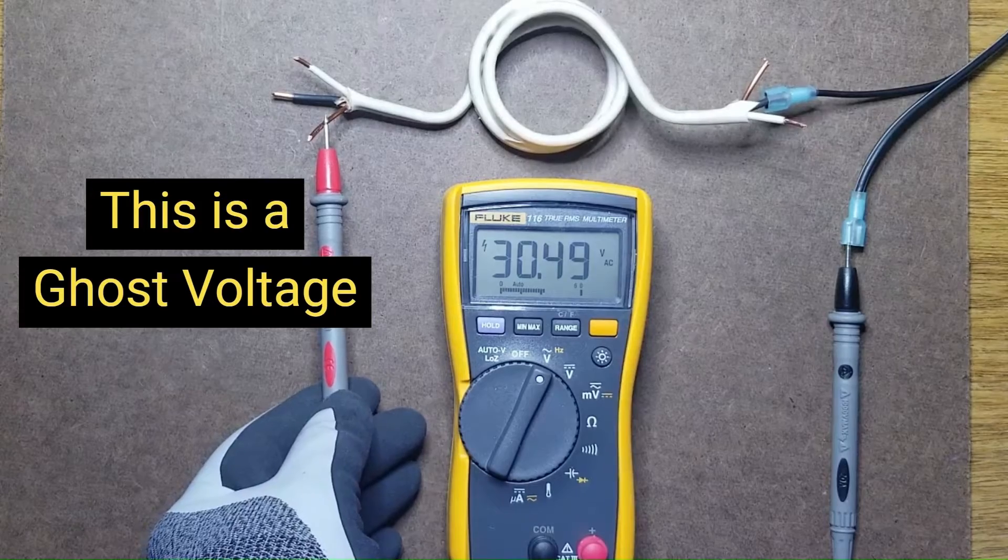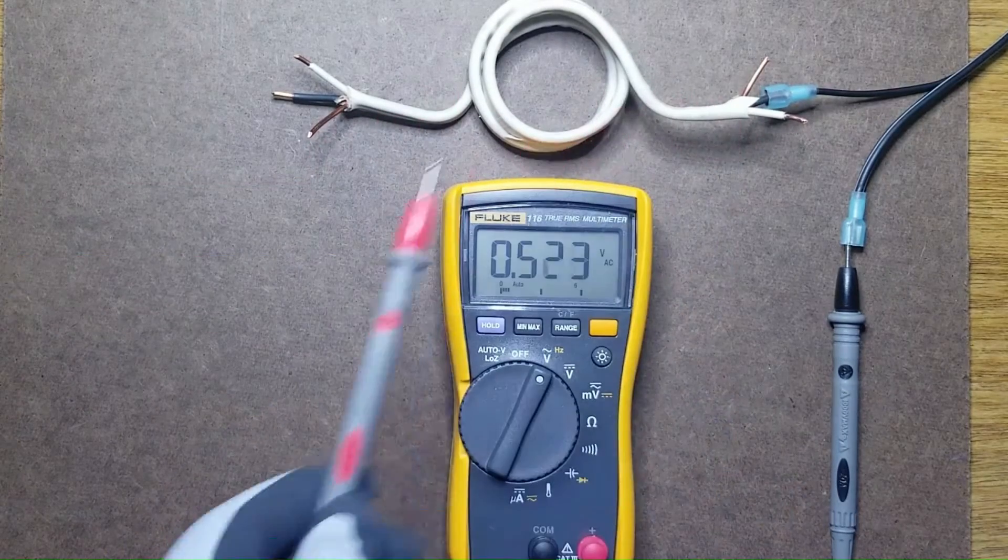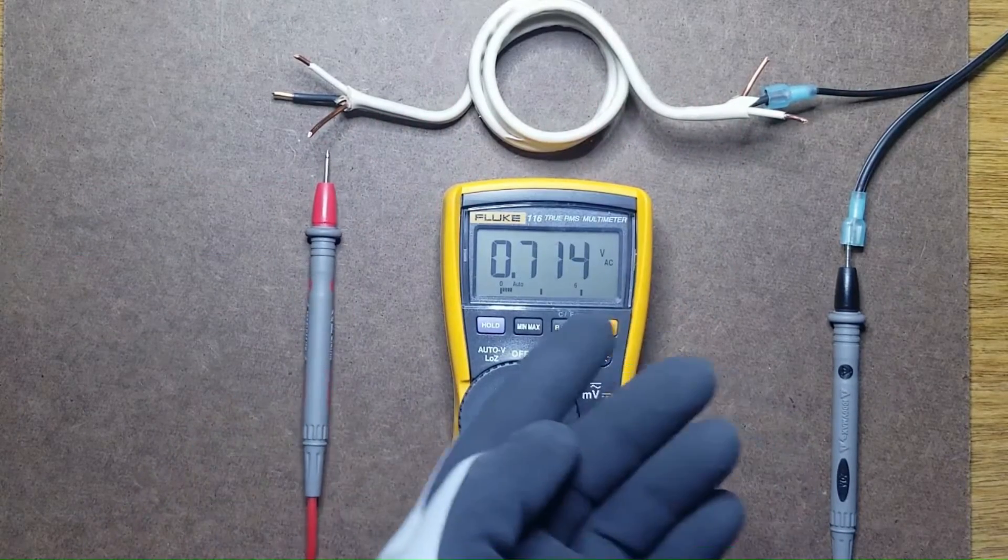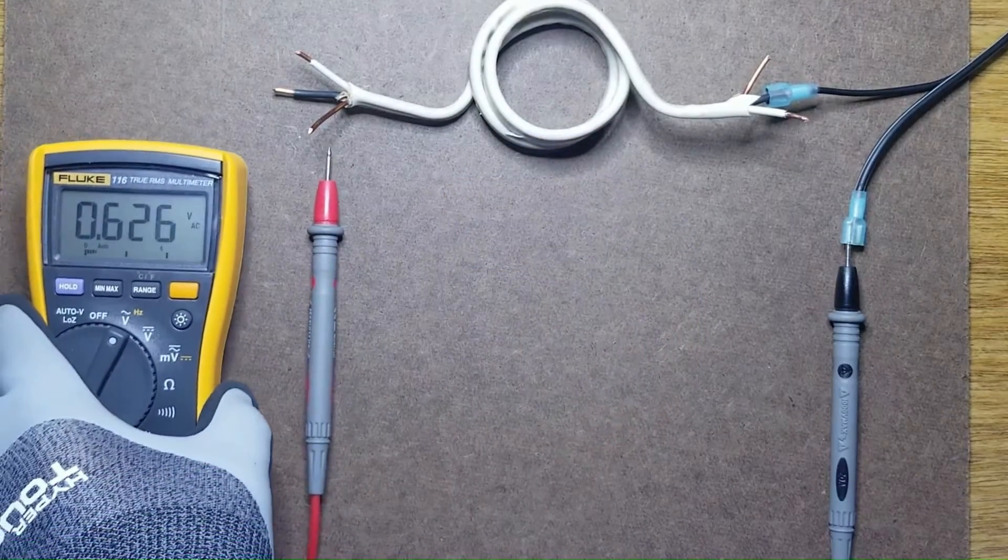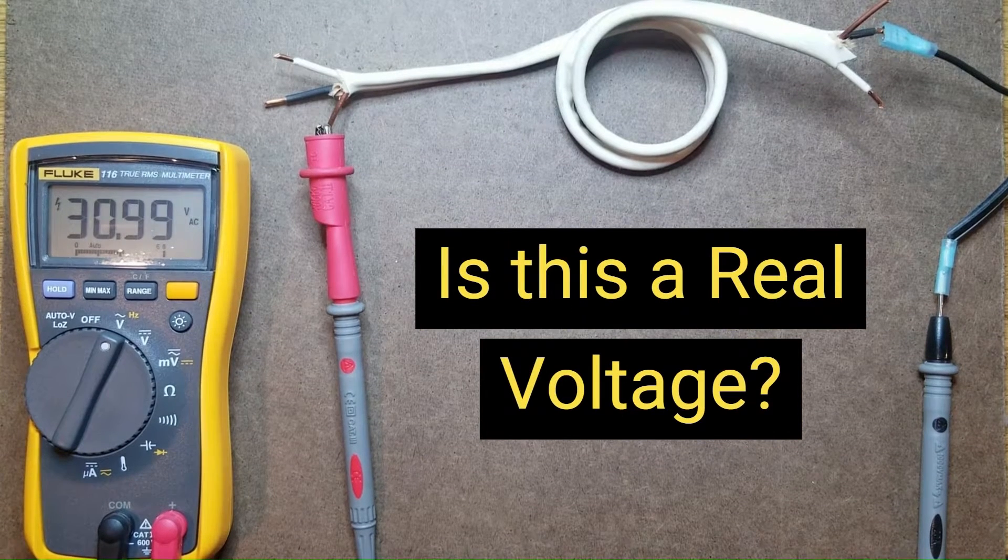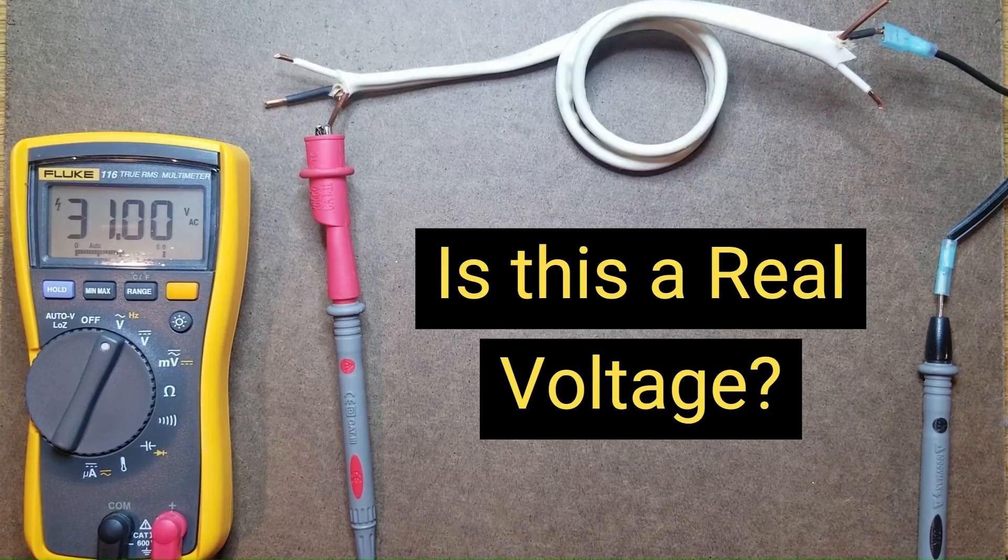In this video, I'll explain what a ghost voltage is, how you can use a low Z meter to detect it, and a little theory about how low Z works. By the way, don't try this at home. This is for demonstration purposes only and I will be using safety measures such as an isolation transformer and will be wearing rubber gloves.